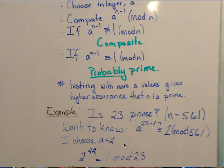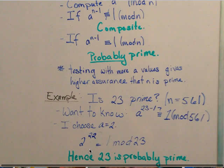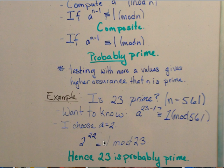So I chose a to be 2 in this case, and a to the 22nd power, or to the 23 minus 1, is equal to 1 mod 23, therefore 23 is probably prime.